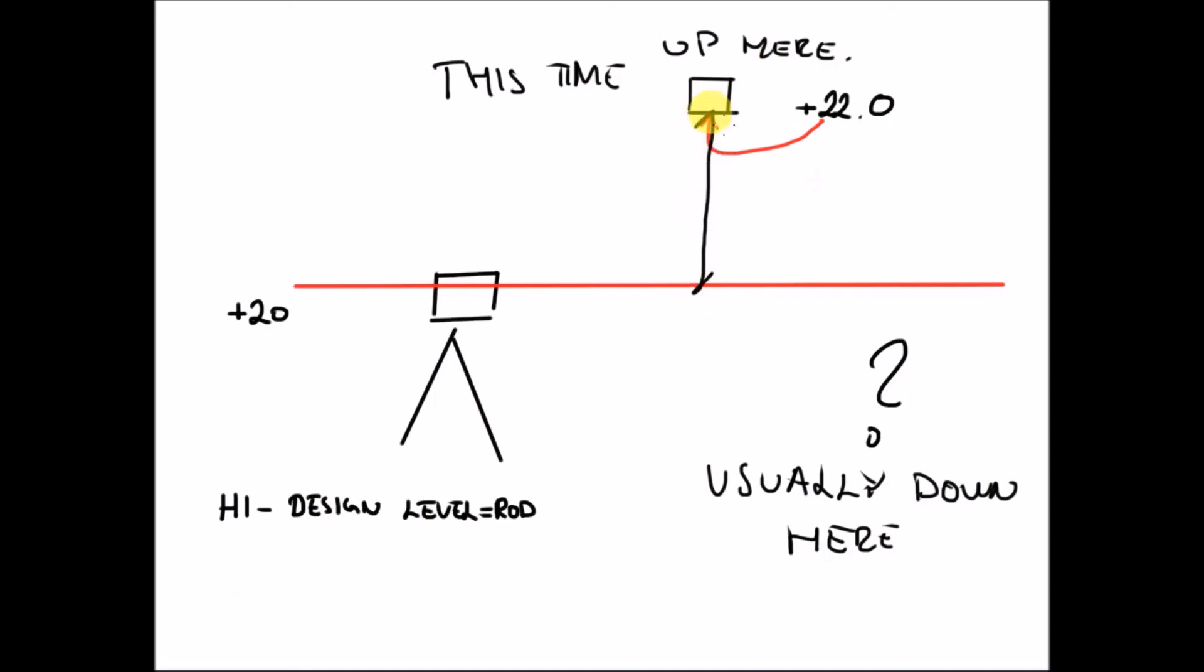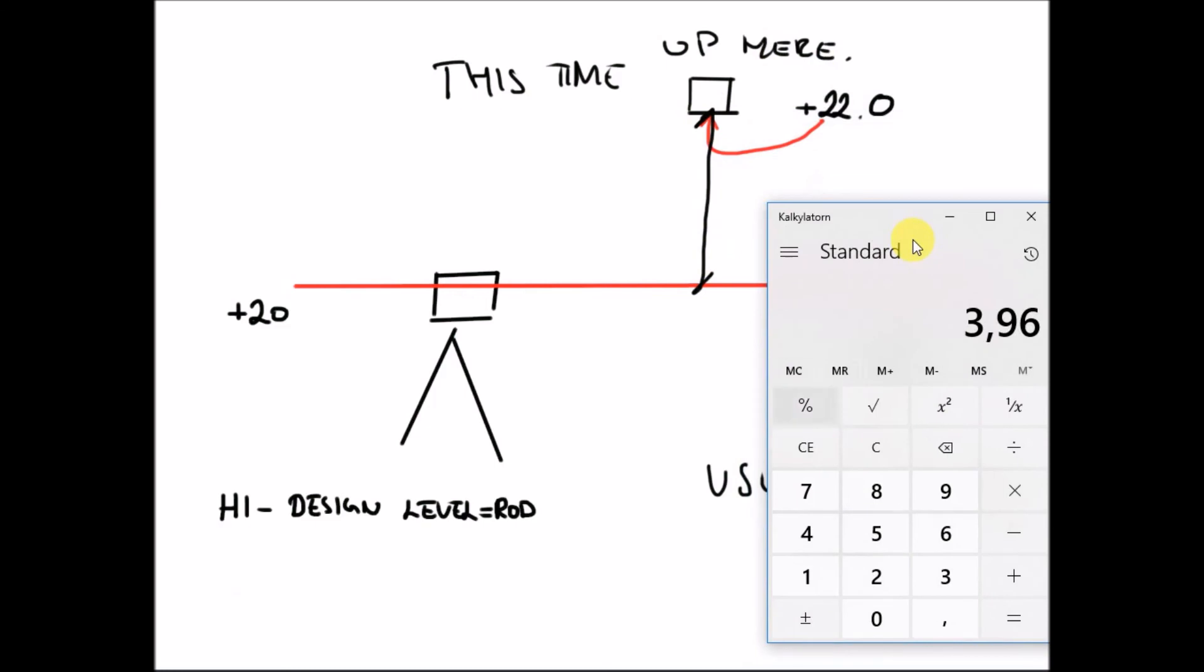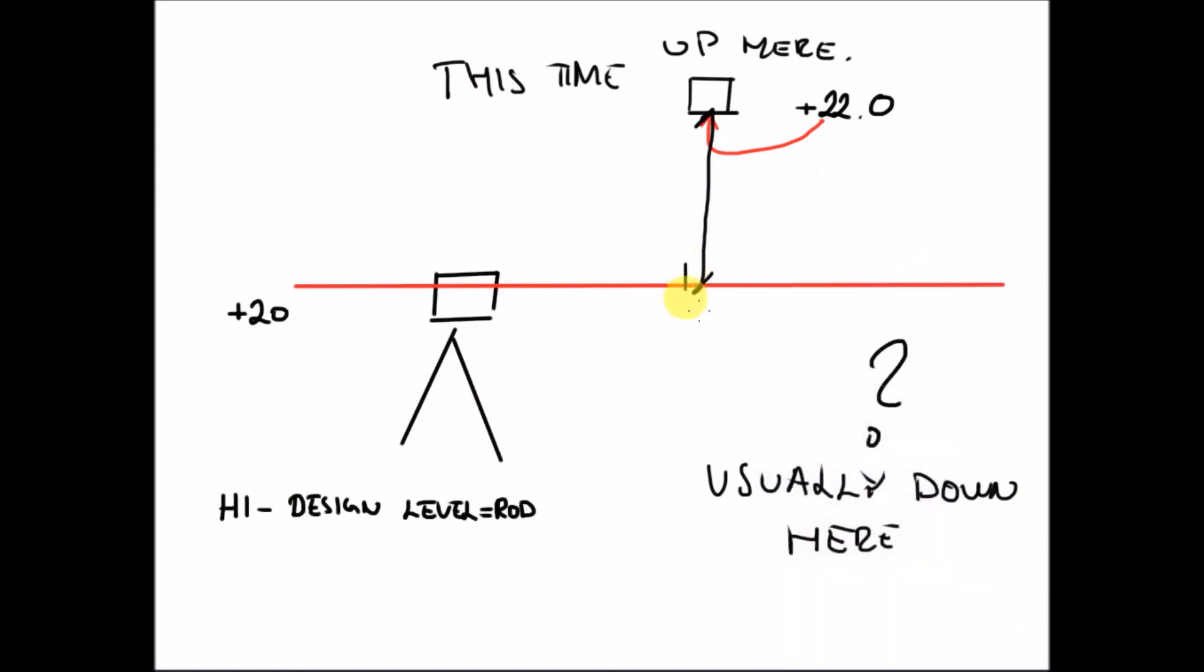If you have a line, it doesn't matter. You need to do something above it, you have to just go the other way around. So if you have a height of instrument of twenty meters and you have something you need to set out at twenty-two meters, you have to set your receiver at the bottom of the staff and mark at the two meter mark on the staff. Does that make sense? Just think of the line.